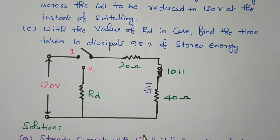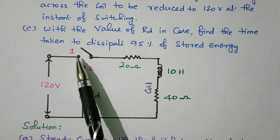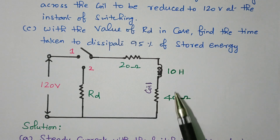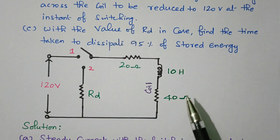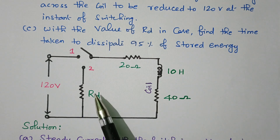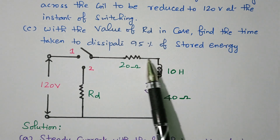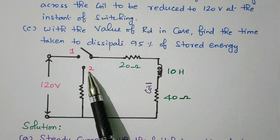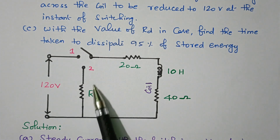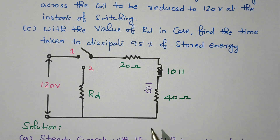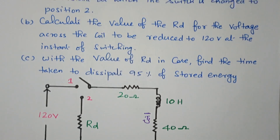First we will refer the circuit diagram. So this is the circuit diagram given: a 120 volt voltage source is available, there are two switch positions. A 20 ohm resistor is connected, here the coil is there — RL resistor and inductor — 10 Henry and 40 Henry. One more resistor RD is available. While connecting at position 1, RD is disconnected; only this resistor and coil is connected. When the switch is connected to second position, RD is also included — RD, 20 ohm resistor, and coil in position 2.